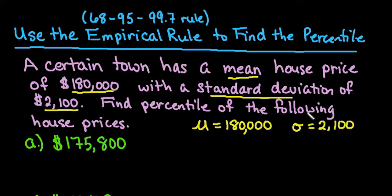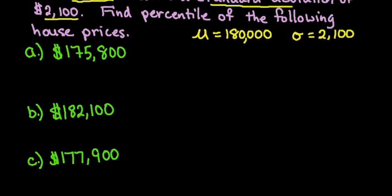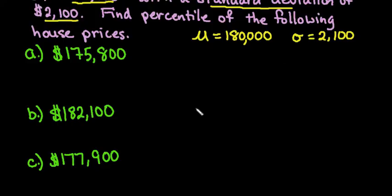We want to find each percentile using the 68-95-99.7 rule. So we want to draw a picture of this. Anytime we're talking about the 68-95-99.7 rule or the empirical rule, we're always referencing a normal curve or a bell-shaped curve.